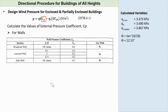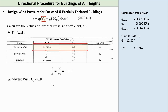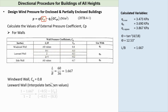For walls, using the same table as earlier, we can get the values of CP using a new value of L over B. Since the wind is now parallel to the ridge, L is now 60 meters and B is taken equal to 36 meters, giving L over B equal to 1.667. For the windward wall, CP equals 0.8 for all values of L over B. For the leeward wall, since L over B is between 1 and 2, we perform linear interpolation to get CP equals negative 0.367. For the side wall, CP is negative 0.7 for all values of L over B.